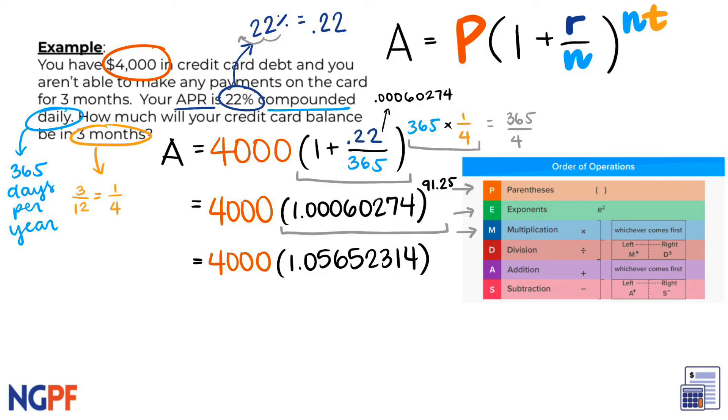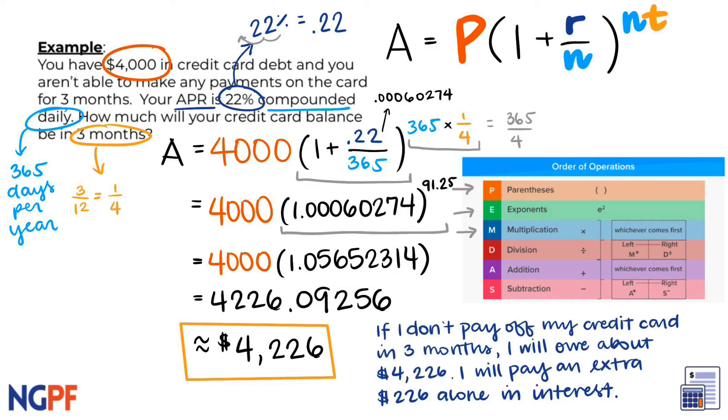We are almost there. The final operation of multiplying the 4,000 will give us a final answer of 4226.09256. This means that if you do not pay off your credit card with a 22% APR after 4 months, you will have to pay back $4,226.